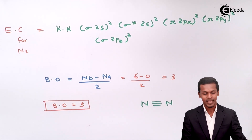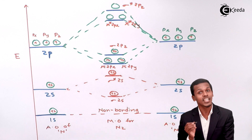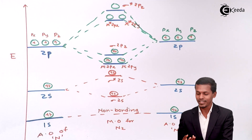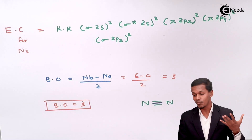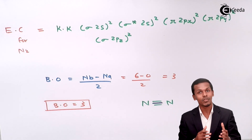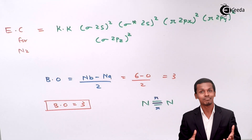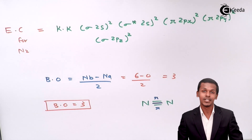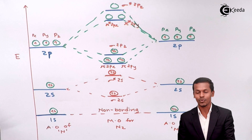There is something important to note: sigma 2pz is responsible for giving a sigma bond, while pi 2px and pi 2py give the two pi bonds. So among the triple bond, one bond is a sigma bond due to the sigma 2pz orbital of both nitrogen atoms, and the remaining two bonds are pi bonds. This represents the bond between the two nitrogen atoms in the nitrogen molecule.